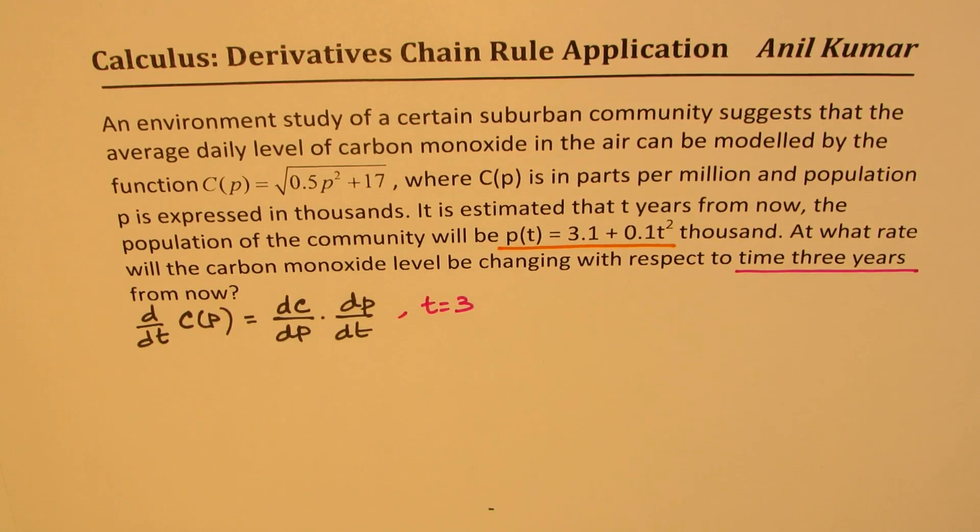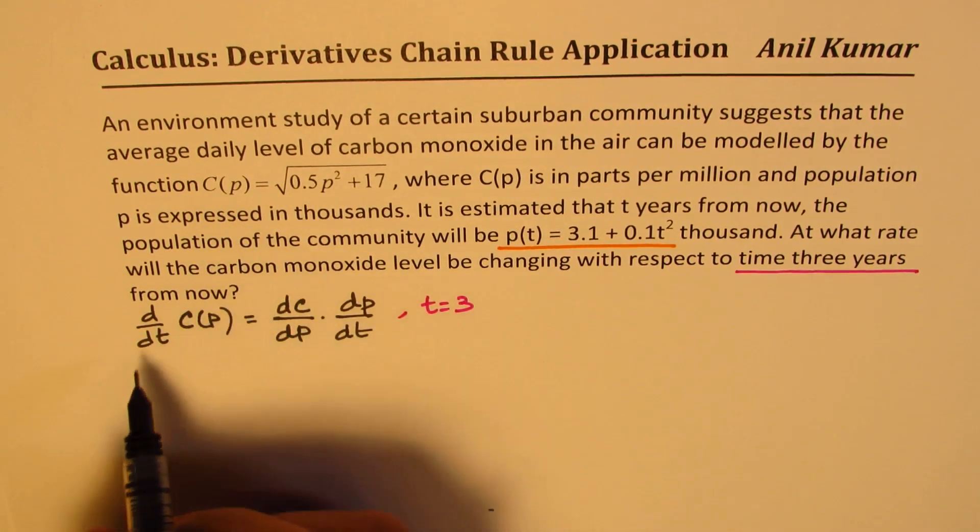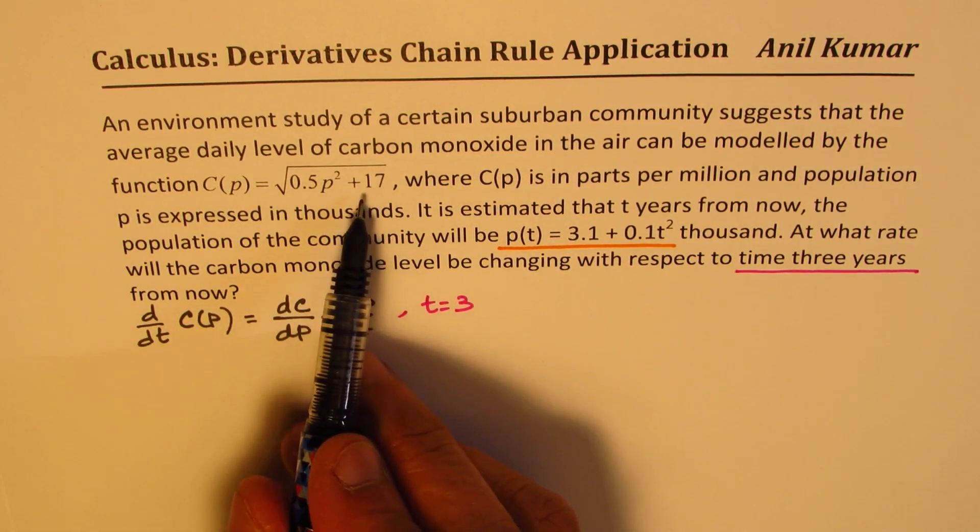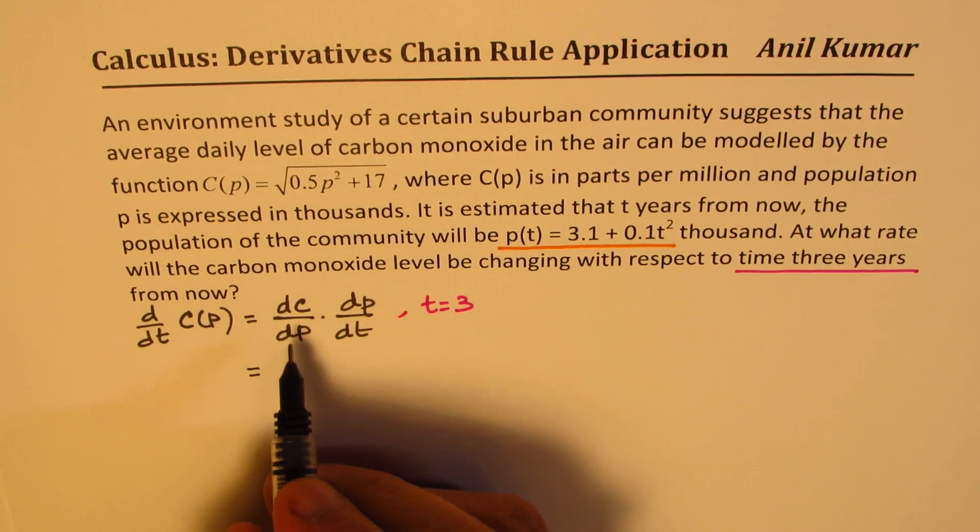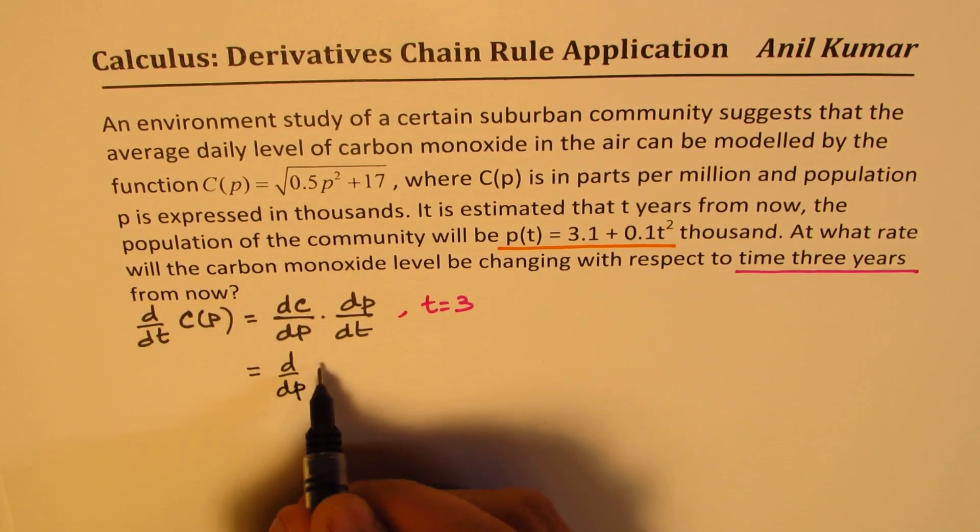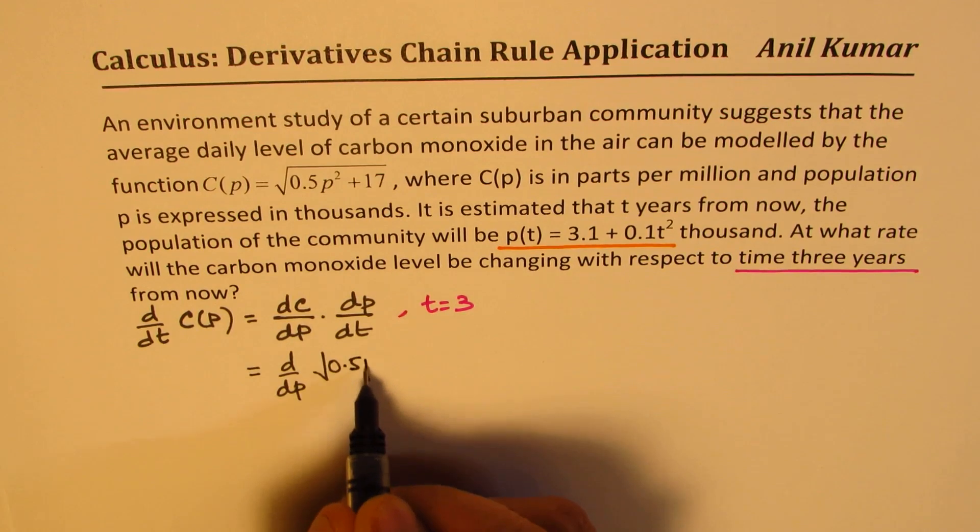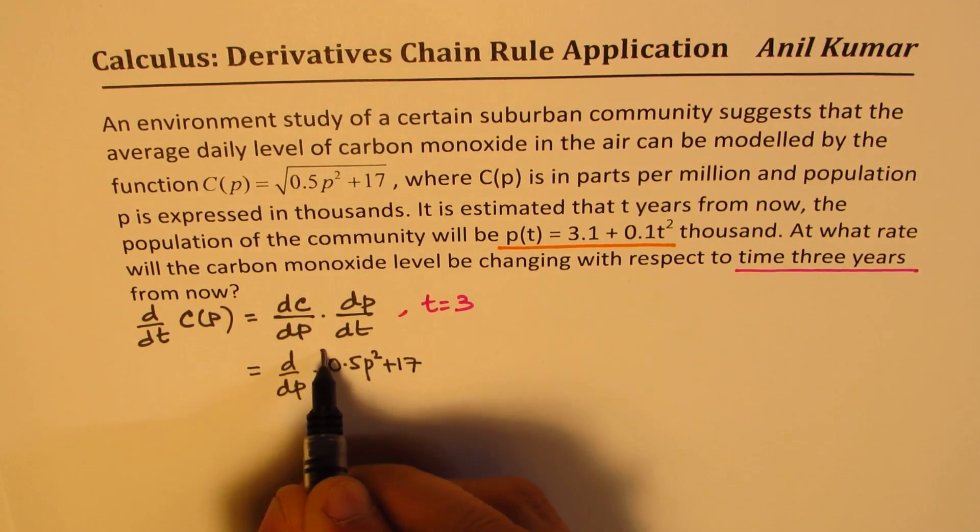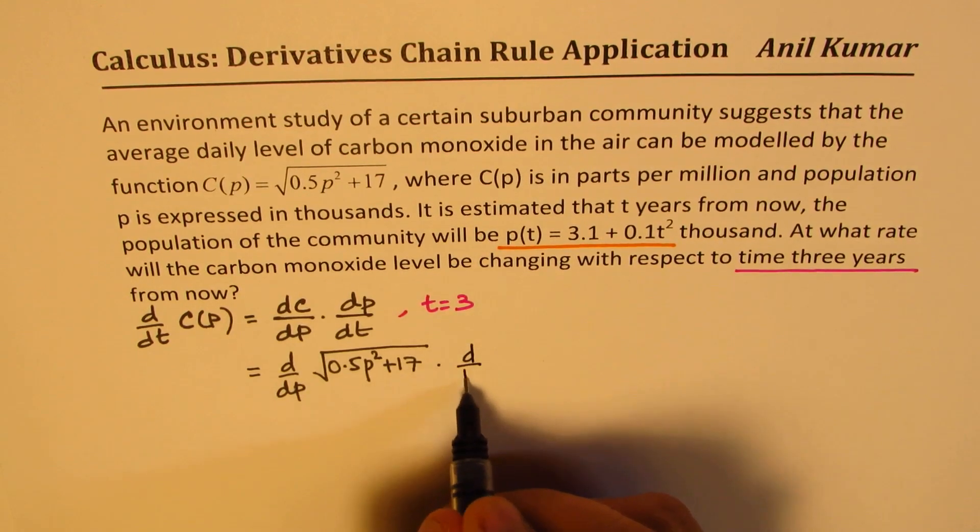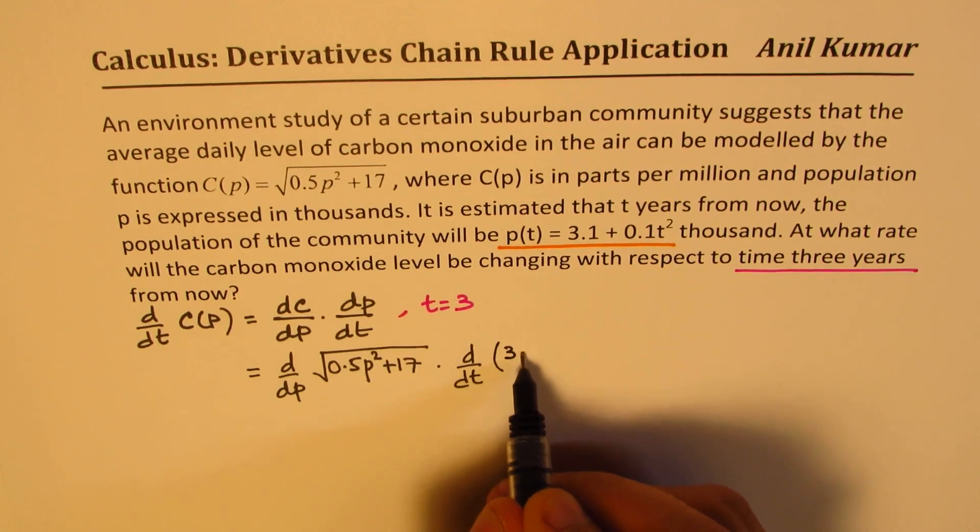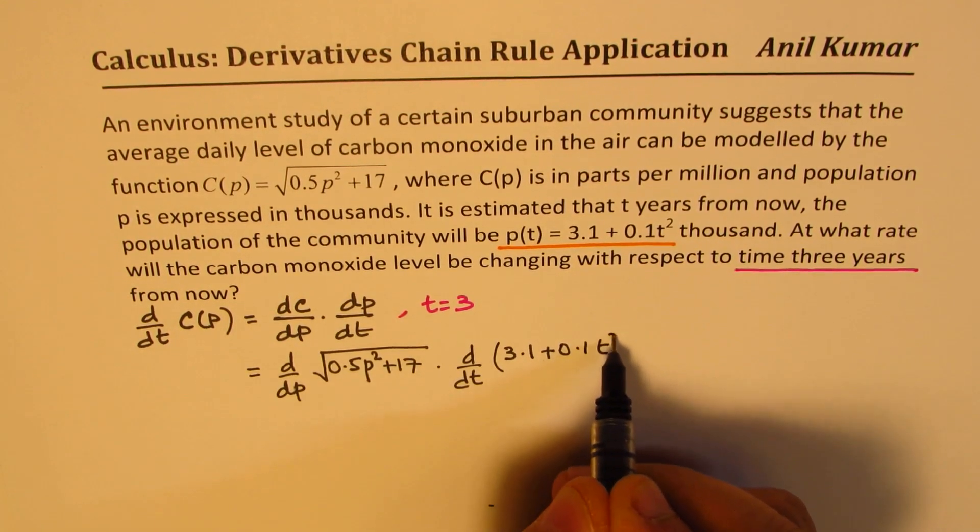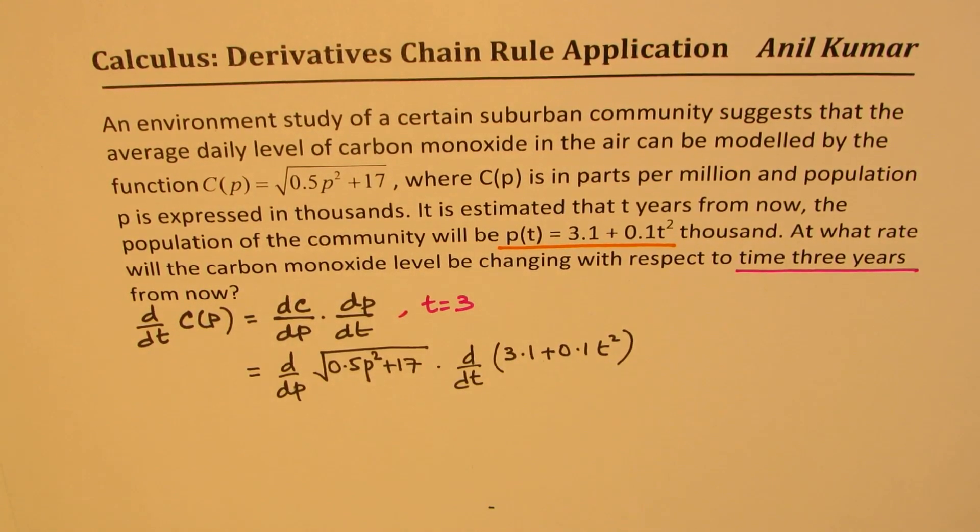So to begin with, let us find the derivative and then we'll substitute the values. So the derivative of this particular function is what? This is, we'll do d/dp of √(0.5p² + 17) times d/dt of this function, which is 3.1 + 0.1t².